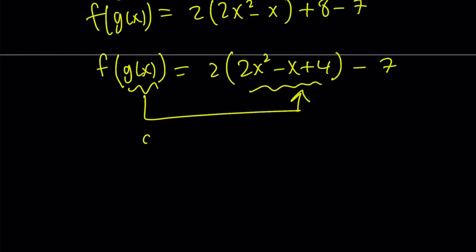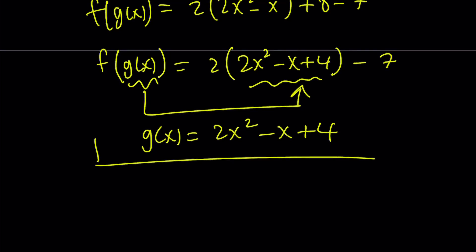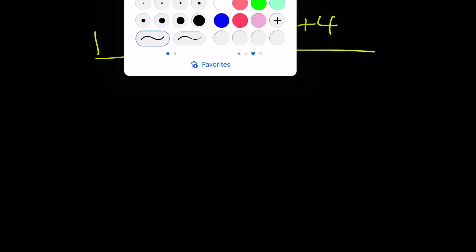But the idea is g of x is 2x squared minus x plus 4. All right, great. That's the end of the first method. Let's go ahead and take a look at the second method.